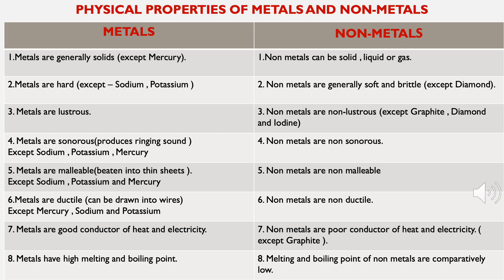You might have seen various things made up of aluminium, copper, and iron — they are all metals. Have you seen coal, sulfur, diamond, and graphite? They are all non-metals.